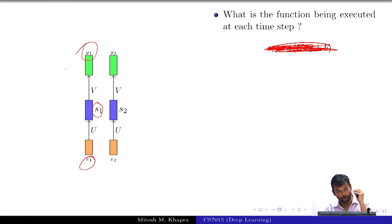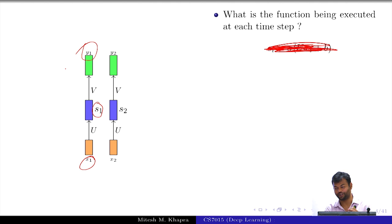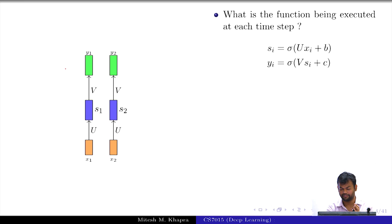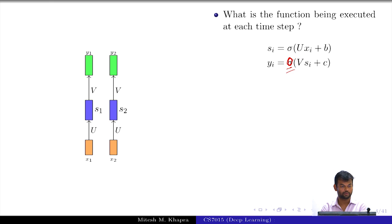What is the function being executed? The output is always a function of the input. Can you write yi as a function of x? What is S1? S1 equals U times x1. And then what is y1? Some output function — we call the output function O always, to make the distinction clear. So this is the function being executed at every time step, and you can write it using these two equations.